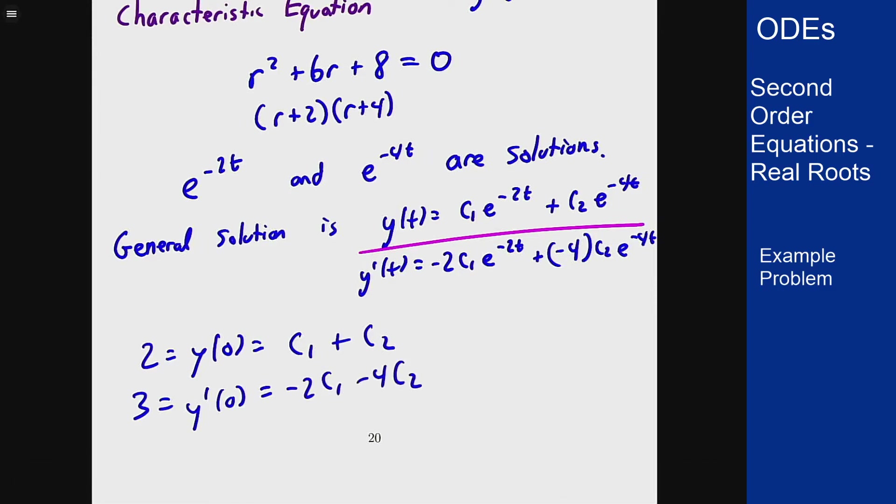We can solve this however we want. I will do it by elimination. I'll multiply the first equation by 2 and then add them together. So on the left I will see 4 plus 3 is 7, and on the right I will see 2 c1 minus 2 c1 is 0, and 2 c2 minus 4 c2 is minus 2 c2. Which then tells me that 7 equals minus 2 c2, or c2 is negative 7 halves.